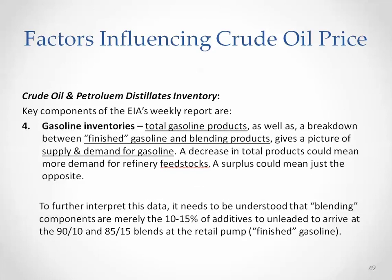The other piece of information included in the report is gasoline inventories. Total gasoline products, as well as a breakdown between finished gasoline and blending products, give a picture of supply and demand for gasoline. A decrease in total product could mean more demand for refinery feedstocks, while a surplus could mean just the opposite. If there is an inventory surplus, it means there will be more supply to the market and prices won't go up — they could potentially go down.